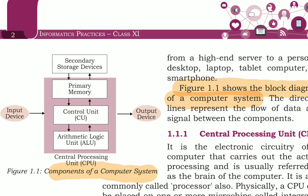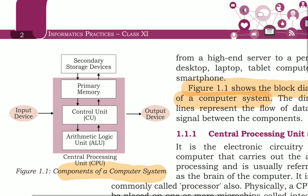As you can see in this block diagram, the CPU is categorized into two parts: the first is ALU, that is the arithmetic logic unit, and the second is the control unit.